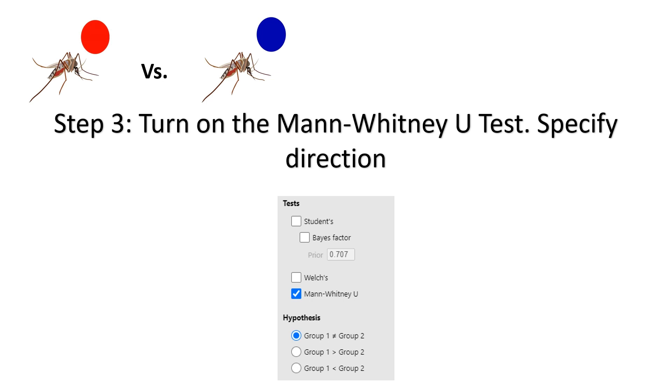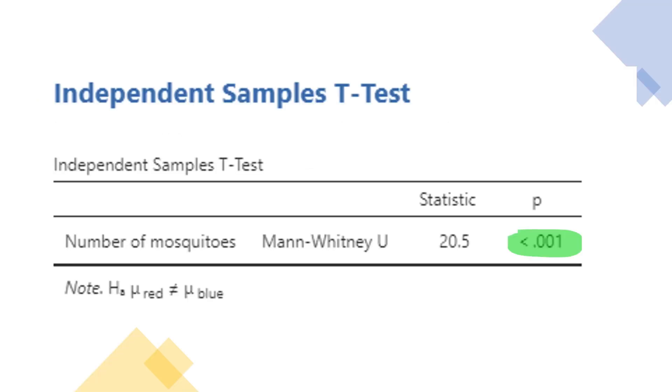So step three, turn on the Mann-Whitney-U test. Specify if your hypothesis is one-sided or two-sided. Here we are doing a two-sided test. And we can see that our results are significant. P is less than 0.05.